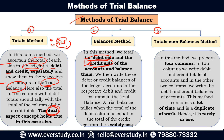In the balance method, for the debit amount and credit amount of the same account — for example, if you have a cash account with a 5,000 debit balance and a 5,000 credit balance, those will cancel out, and you will show only that net balance in the trial balance. That is the basic aspect of the balance method, and it is more commonly used compared to the total method.